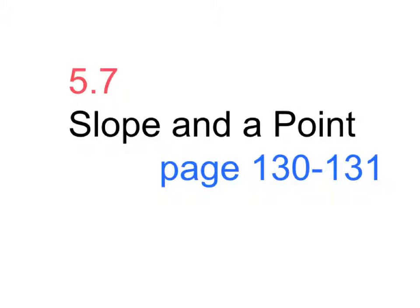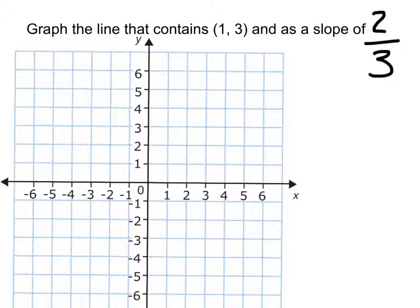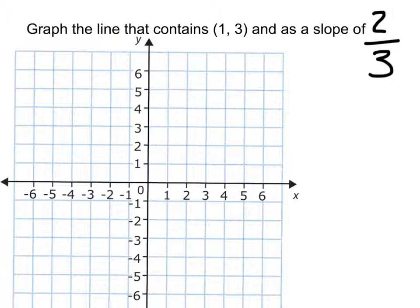Today we're going to work on Unit 5 Lesson 7, Slope and a Point, on pages 130 and 131. To find the slope, we first need to graph the ordered pair, and then calculate the rise over run.